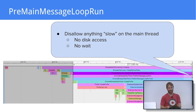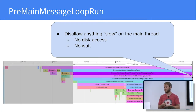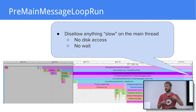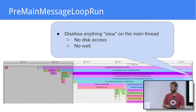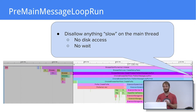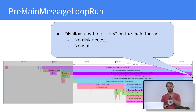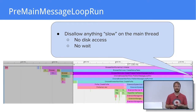Finally, the last thing we do in Chrome's synchronous initialization is to disallow anything slow on the main thread. Up to that point, code could read files from disk synchronously on the main thread. But if we do that during Chrome's steady execution, we will cause jank, which we do not want. So from that point, there are no more disk accesses or waits allowed on the main thread.